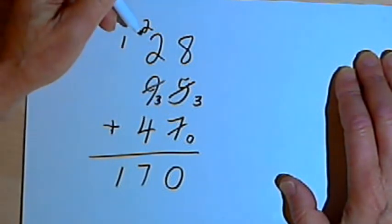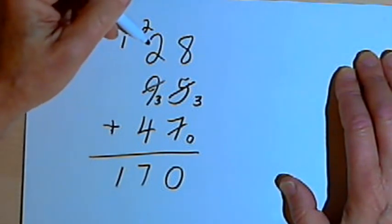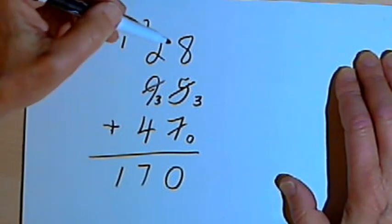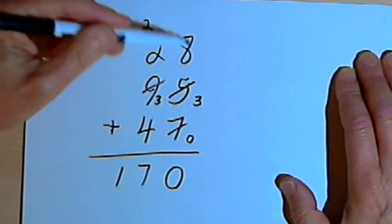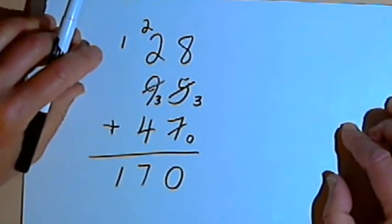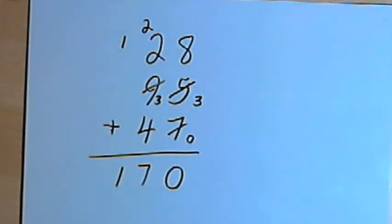Now notice when you do this, you still have to have your basic arithmetic facts memorized. You have to know how to add two single-digit numbers together. You just don't have to be remembering as much as you go through the process. So, I hope this helps. Take care. I'll see you next time.